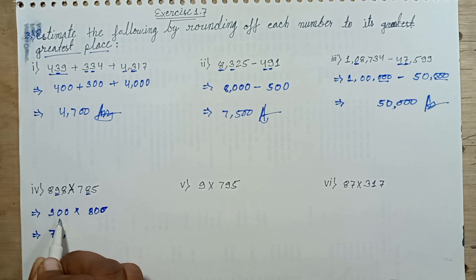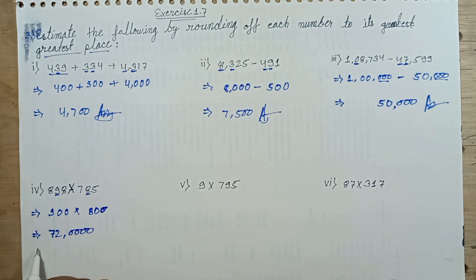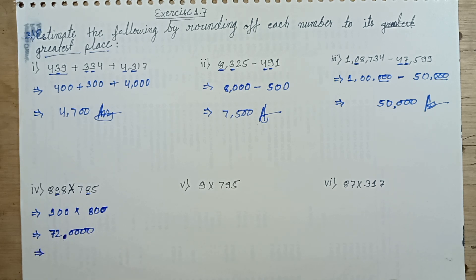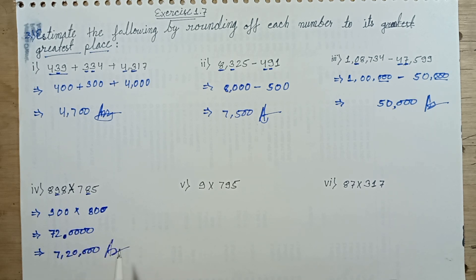72 and 4 zeros. Adding the product of this number, separate by comma in Indian system of numeration. Result is like 720,000. This is my answer.